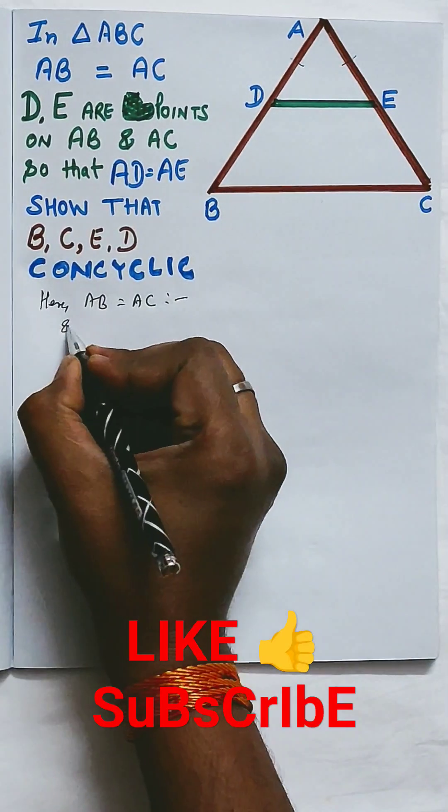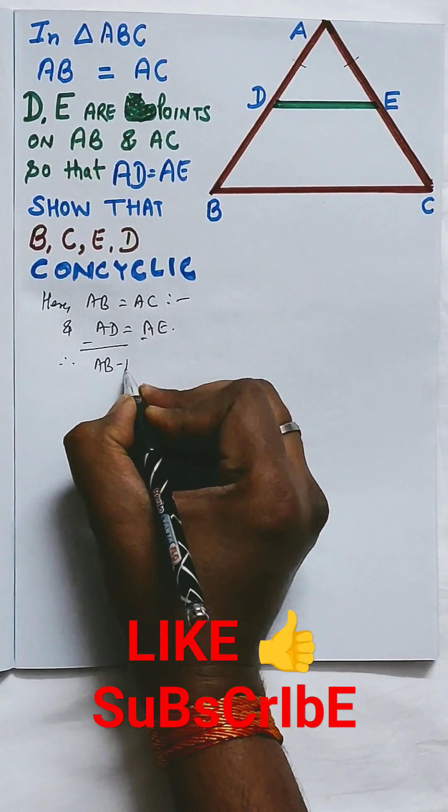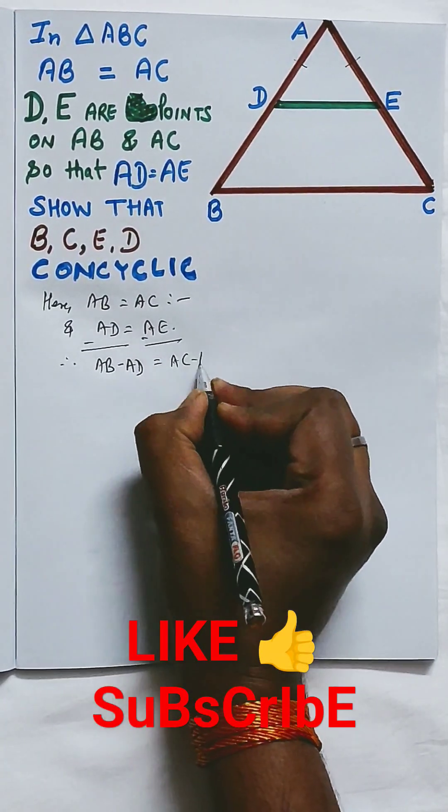Now we have to prove B, C, E, D is concyclic. Right here AB equal to AC and AD equal to AE.